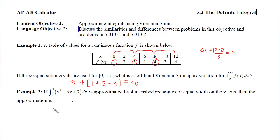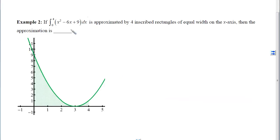With example 2, we are given an accumulation of a function, and I want to approximate it with four inscribed rectangles. Now inscribed means I need to have the smallest y value in each subinterval, so this is going to require some graphing. So you can see here that I've graphed this polynomial, which is a parabola. It opens up, and it has its vertex at the point 3, 0.